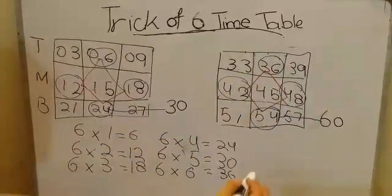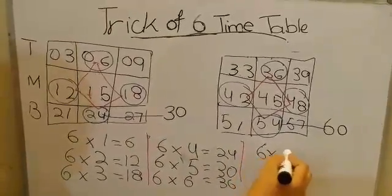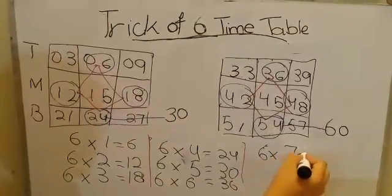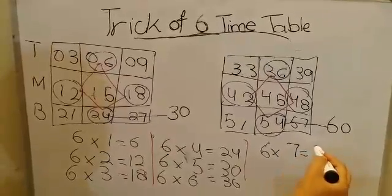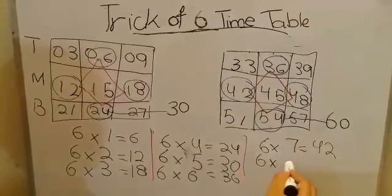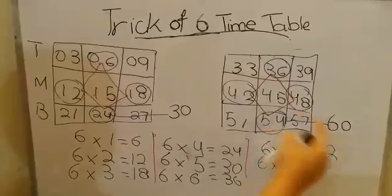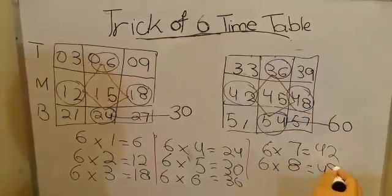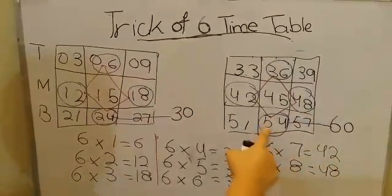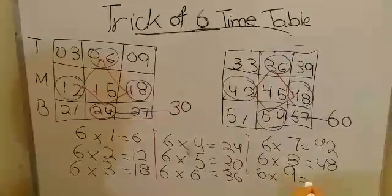Six times seven is forty-two. Six times eight is forty-eight. Six times nine is fifty-four.